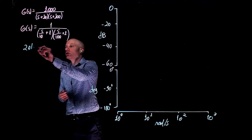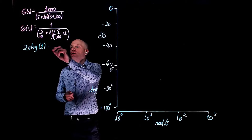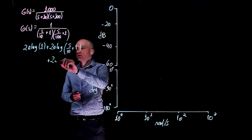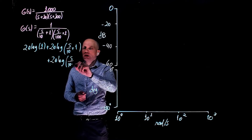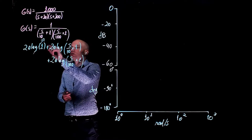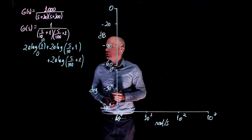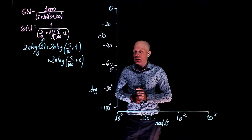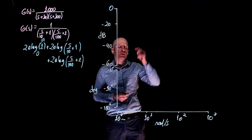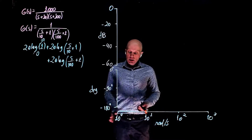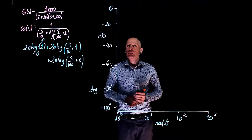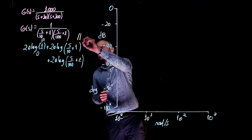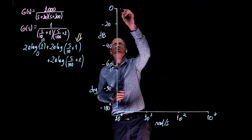Taking 20 log, we have 20 log of 1 plus 20 log of (s/10 + 1) plus 20 log of (s/100 + 1). The first term is zero and can be neglected, leaving two building blocks — two real poles. Starting with the pole at cutoff frequency 10 radians per second: anything below 10 radians per second has a magnitude of zero.